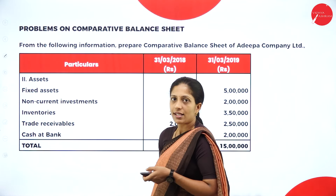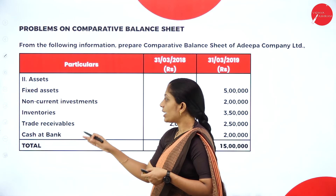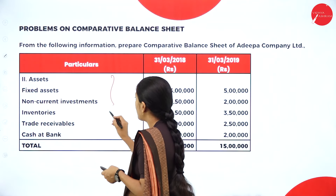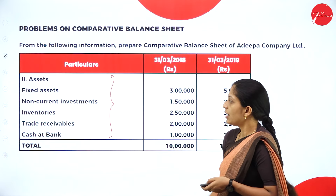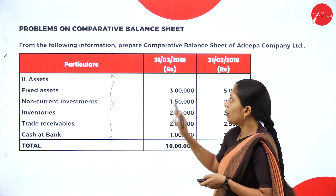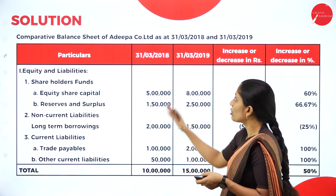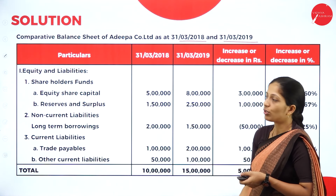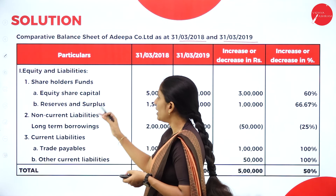They have also given assets: fixed assets, non-current investments, inventories, trade receivables, cash at bank. Certain headings and subheadings are missing, so we have to record them in order. We have to prepare the solution — comparative balance sheet of Adipa Company Limited as on 31st March 2018 and 31st March 2019. The columns required for comparative statement are: particulars, two amount columns (2018 and 2019), increase or decrease in rupees, and increase or decrease in percentage.